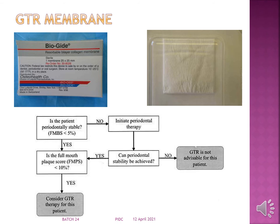This is a GTR membrane from our department. When is a patient advised for GTR? If the patient is periodontally stable, with a full-mouth bleeding score less than 5%, then check the plaque score. If the plaque score is less than 10%, the patient may be considered for GTR; otherwise, GTR is not advised.